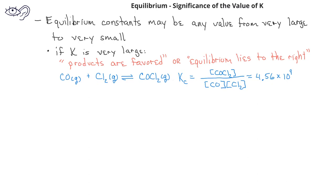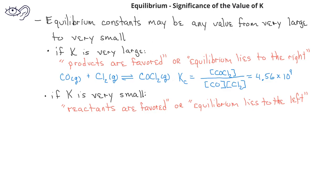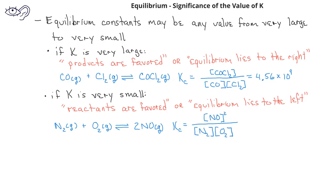However, if an equilibrium system has a K value that is very small, a chemist would say that the reactants are favored over the products, or that the equilibrium lies to the left. So let's look at the example of nitrogen gas reacting with oxygen gas to produce two nitrogen monoxide gas molecules. The equilibrium constant expression is the concentration of NO gas squared divided by the concentration of N₂ times the concentration of O₂. The K sub c value for this equilibrium system is 1 times 10 to the minus 30. This is a very, very small number, and it's a good thing, because nitrogen gas and oxygen gas are the two major components of our atmosphere. If this equilibrium system favored the products, we would quickly run out of oxygen gas, and we wouldn't be here to learn about chemistry.